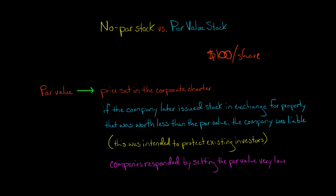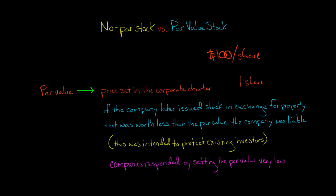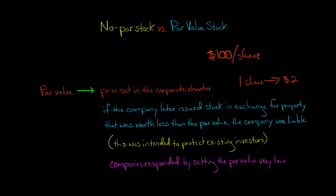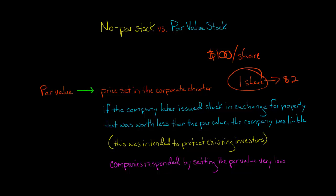Let's say we've got a $100 par value and you're an investor who buys a share at $100 par value. Now, if that company at some point in the future issues a new share to somebody else in exchange for property that is worth only $2, you'd say: wait a minute — they just gave $2 of property and got a share. This was supposed to be a $100 par value share. I'm worried this company is just giving away shares for things of very little value, basically flooding the market with shares, and now my share is going to be worth a lot less.